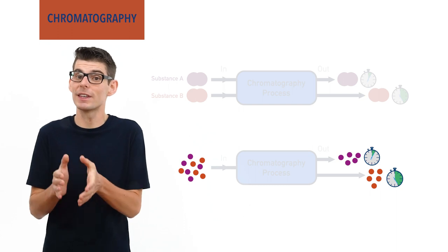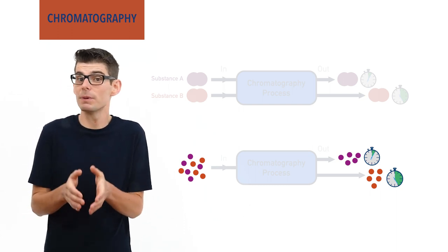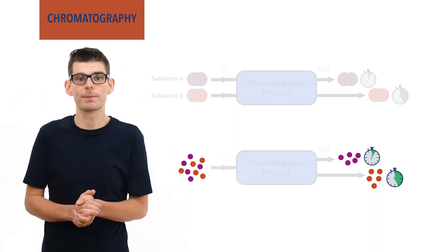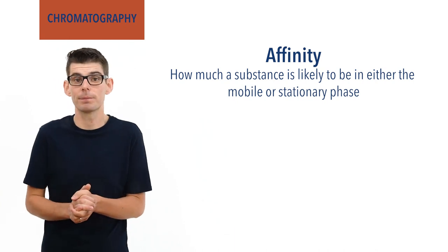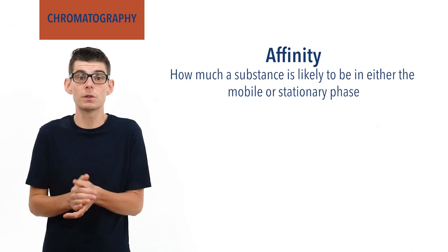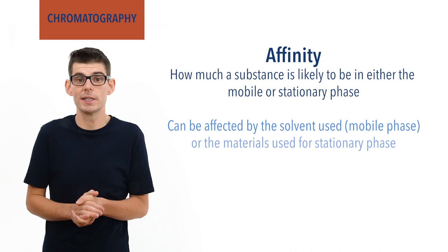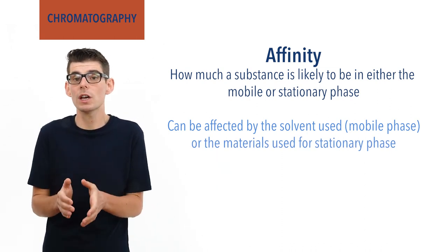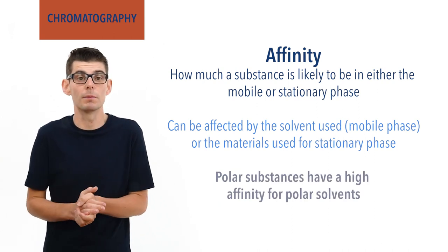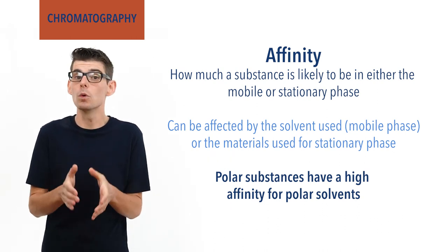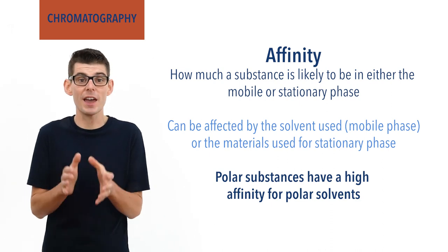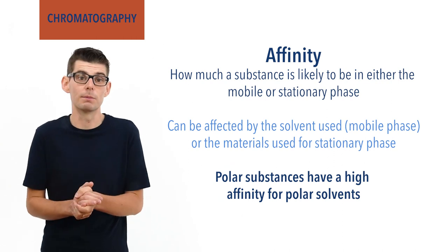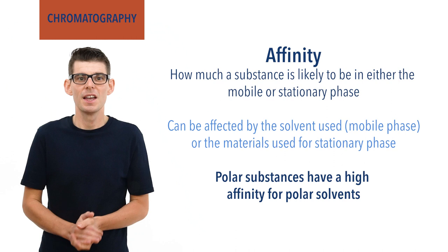Sometimes substances can be further analysed as they get separated, and can even be identified based on the length of time they spend in each phase. How much time a substance spends in one phase compared to the other is referred to as its affinity, and this is based on specific properties of the substance such as its polarity. The affinity can be affected by the solvents used for the mobile phase or the materials used for the stationary phase. If a substance is polar, it will spend more time in a polar solvent (the mobile phase), whereas a non-polar substance would spend more time in the stationary phase. Even slight differences in polarity affect the time spent in each phase, meaning small differences between molecules can allow them to be separated.